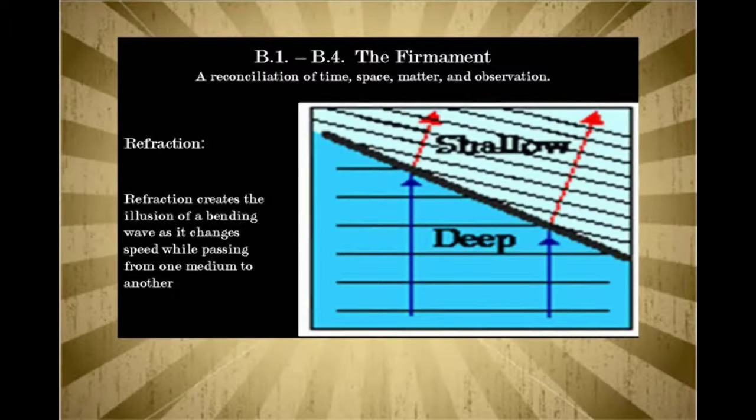Light doesn't literally bend, but it's an illusion created by your eye that shows the bending because it's changing in a direct line. It is changing speeds, and your eye sees that change as a bending line.